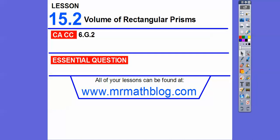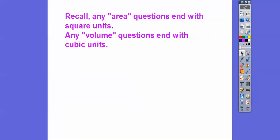Hey, everybody. This lesson is volume of rectangular prisms. Last lesson we did surface area. Recall, anything that ends with area ends with square units.